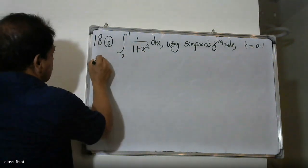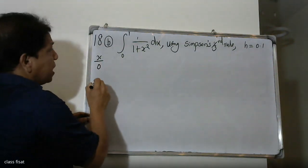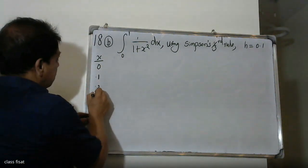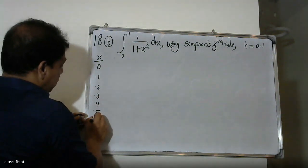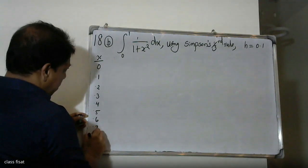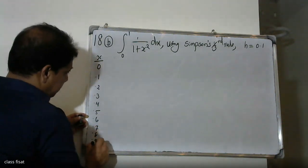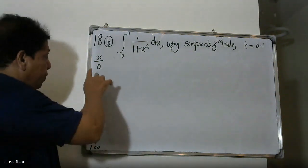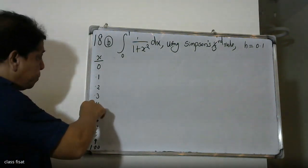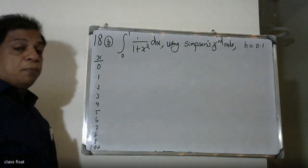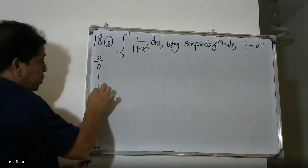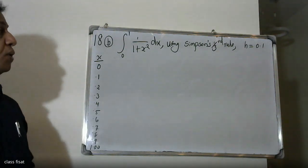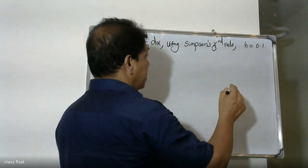Starting from x equal to 0, the x values with difference h=0.1 are: 0, 0.1, 0.2, 0.3, 0.4, 0.5, 0.6, 0.7, 0.8, 0.9, 1. These give us points 1 through 10. There are 10 intervals, so n is equal to 10.